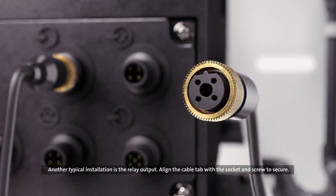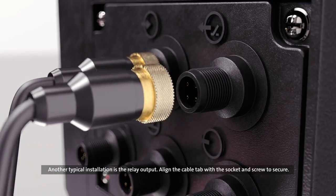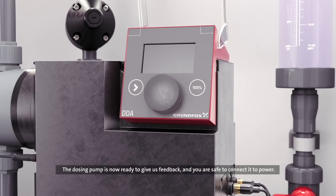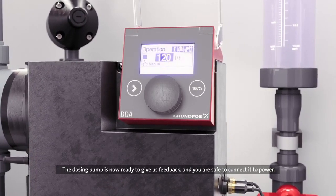Another typical installation is the relay output. Align the cable tab with the socket and screw to secure. The dosing pump is now ready to receive input signals and give us feedback. And you are safe to connect it to power.